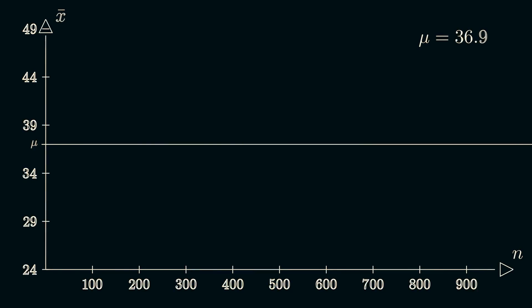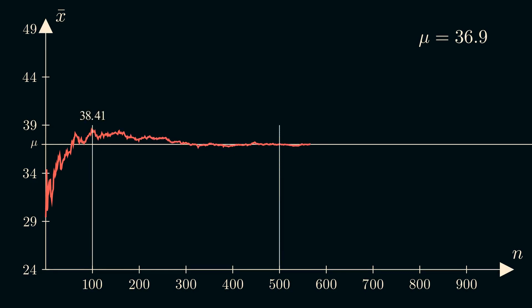Ignoring any real-world considerations with the sample and assuming it's completely random, as we continue to take samples you can see that slowly the mean of all our samples, the mean of the sampling distribution, converges to the actual population mean.